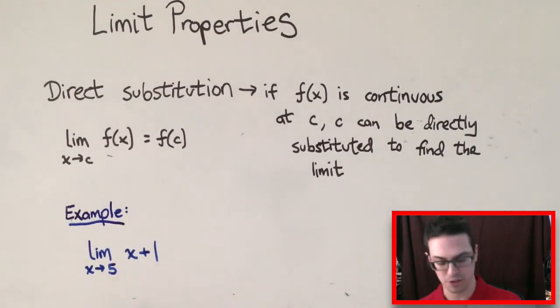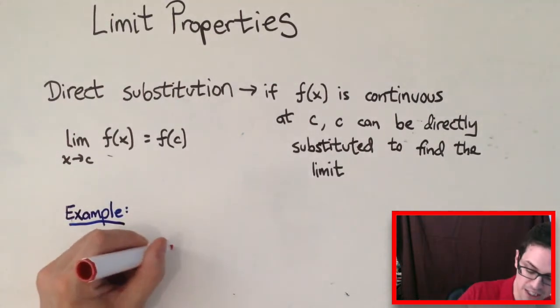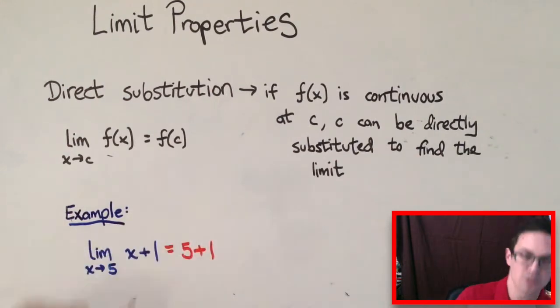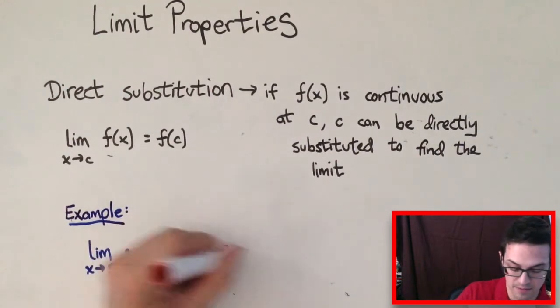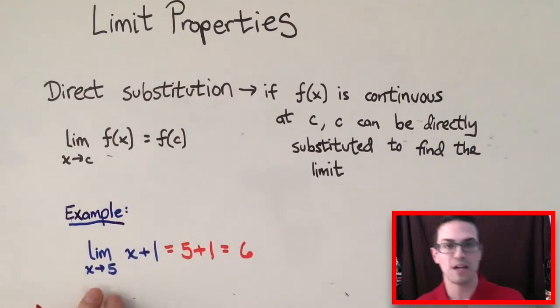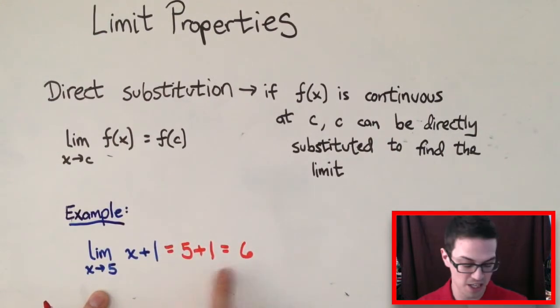So I should be able to just substitute this 5 into this function, and you'd end up with 5 plus 1, and then 5 plus 1 would be 6. So the limit of this function as X gets closer to C would be 6.